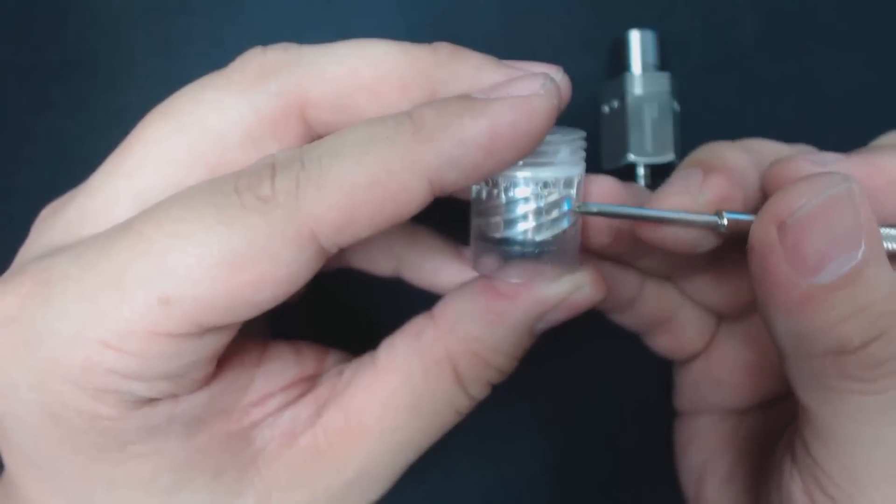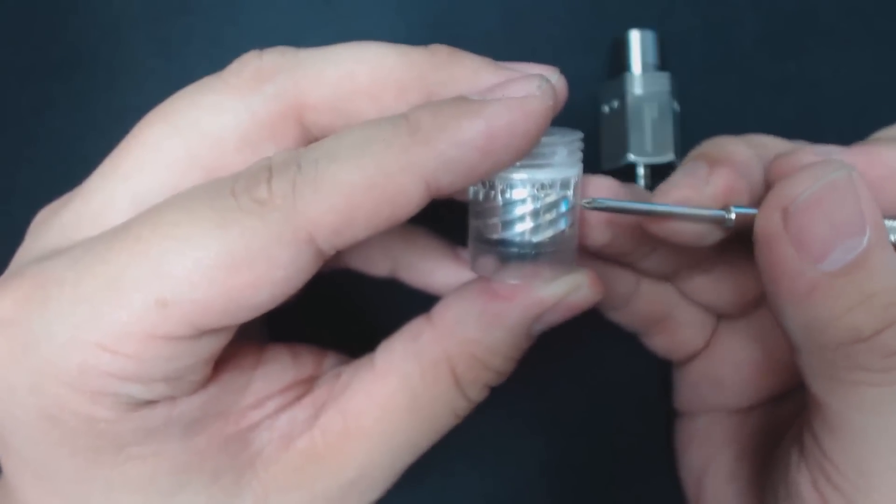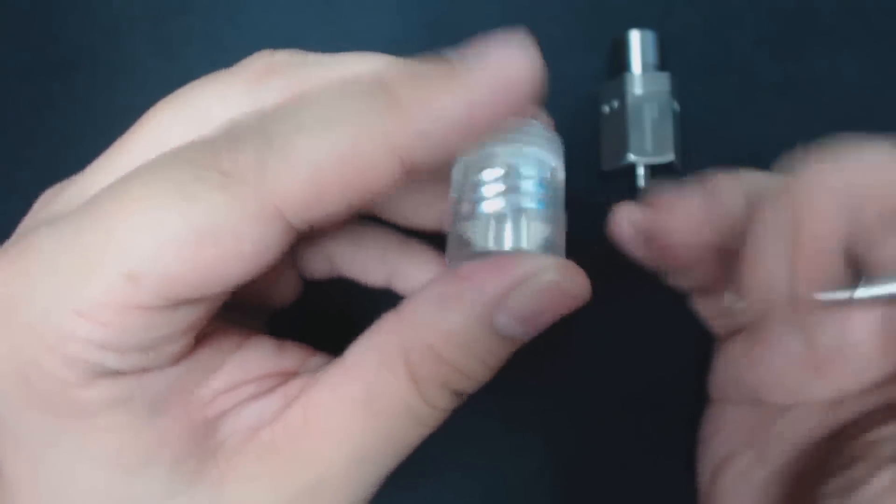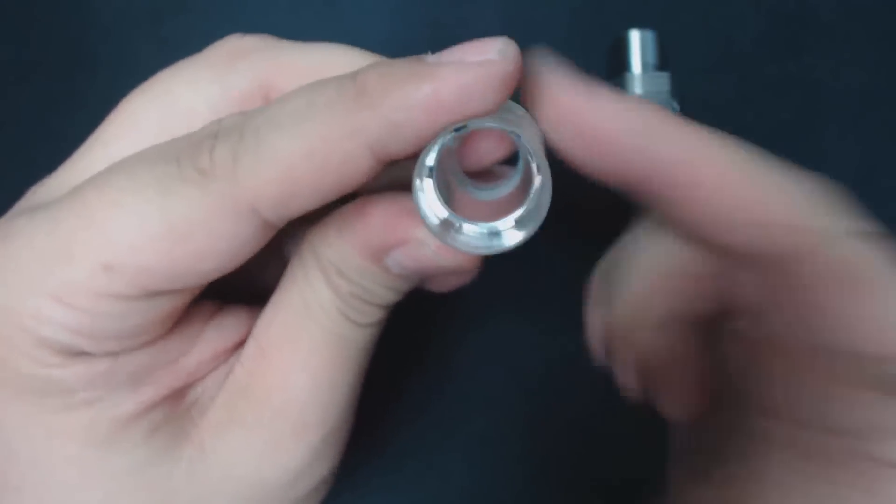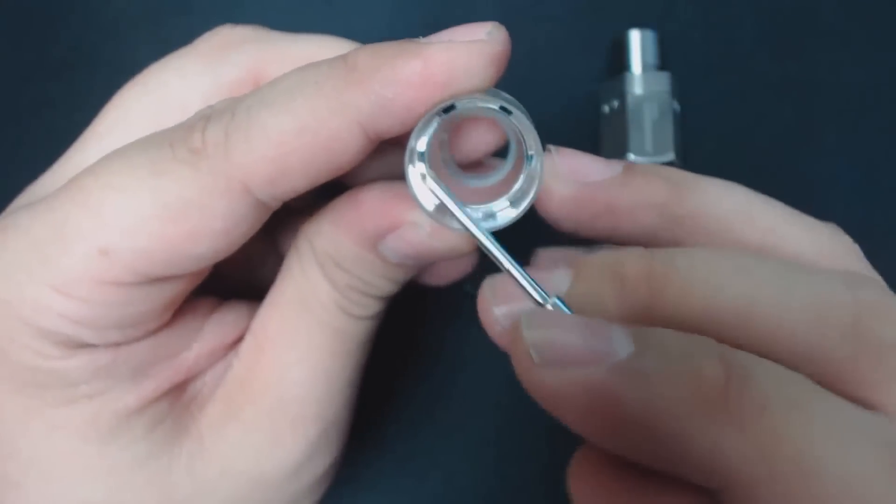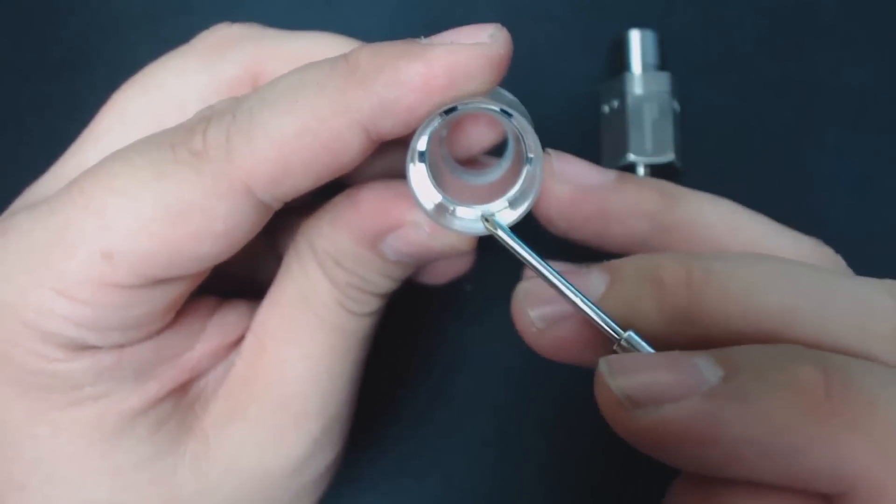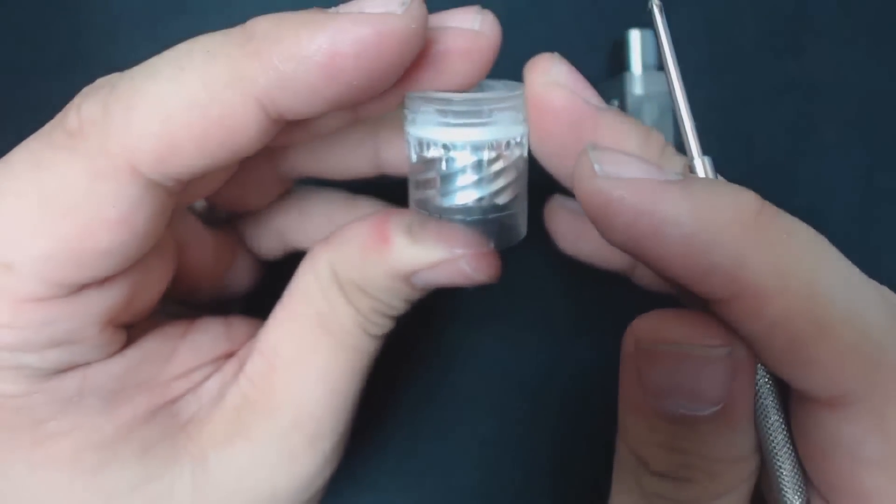Because of the design of the airflow, there is no way that juice can come back presenting a leaky RDA. Also, with the way that the airflow is designed at the bottom, we no longer have to aim the hole towards the coil in order to get proper airflow to our coils.